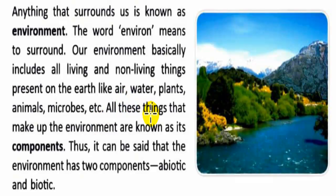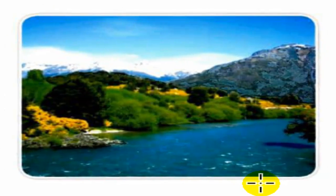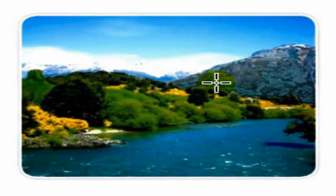The environment includes all the things around us. The word environment means to surround. The things in our environment — like air, water, plants, animals, and microbes — are its components. The environment has two types of components: biotic and abiotic. Let's see this picture — this is the environment.